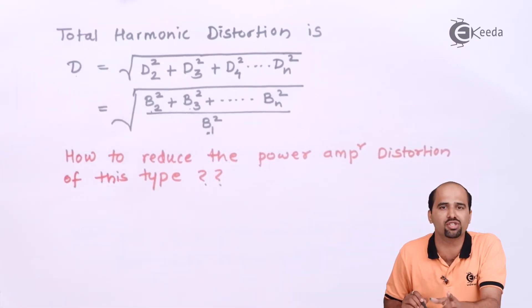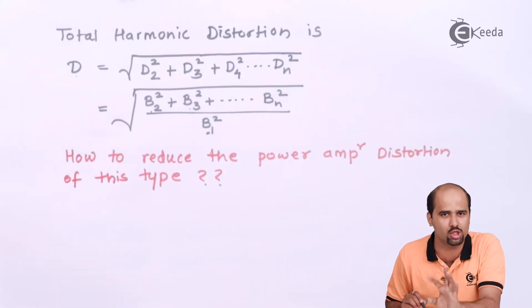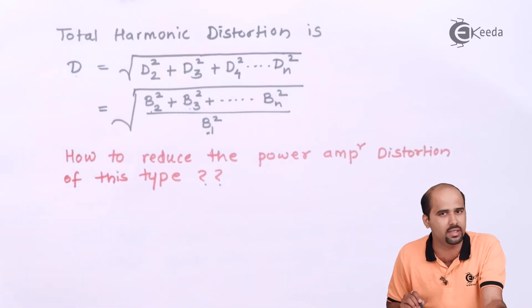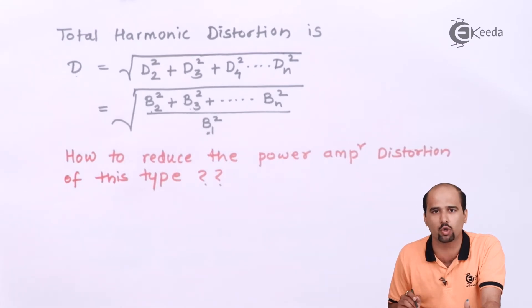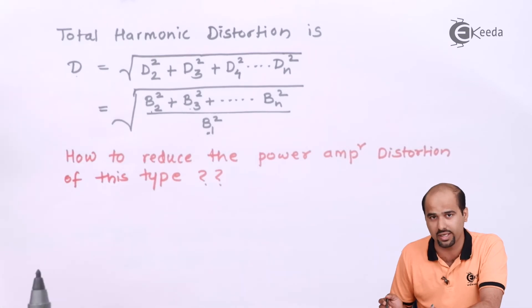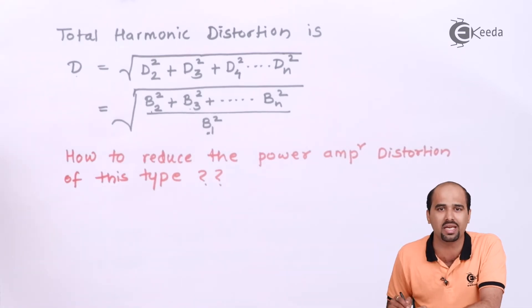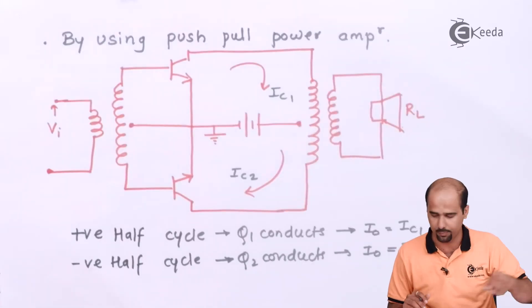Total harmonic distortion is a form of noise. I cannot destroy it completely, but I can reduce it to some extent. This can be done by using a Class B push-pull power amplifier. Let's see how.